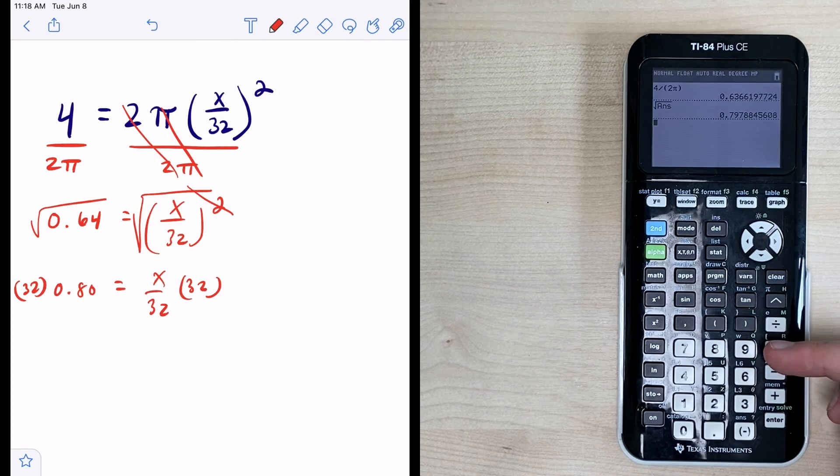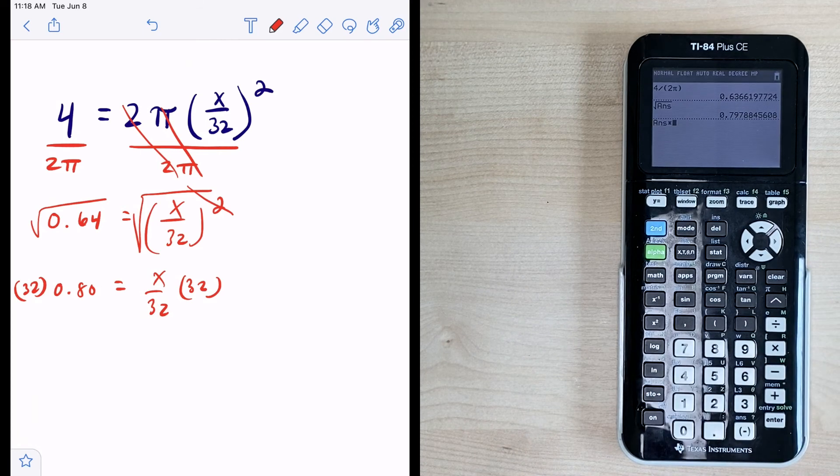So all we have to do is hit the multiplication button and that says ANS. So that's taking the previous answer and we're going to multiply it by 32. Okay we hit enter and now we can round because this is our final answer.